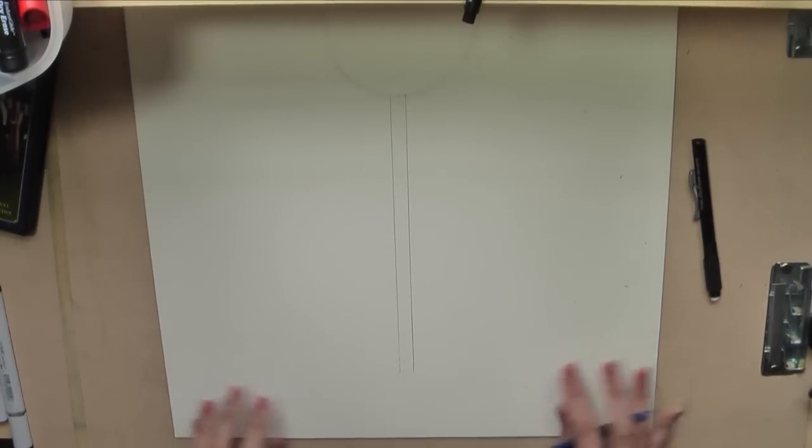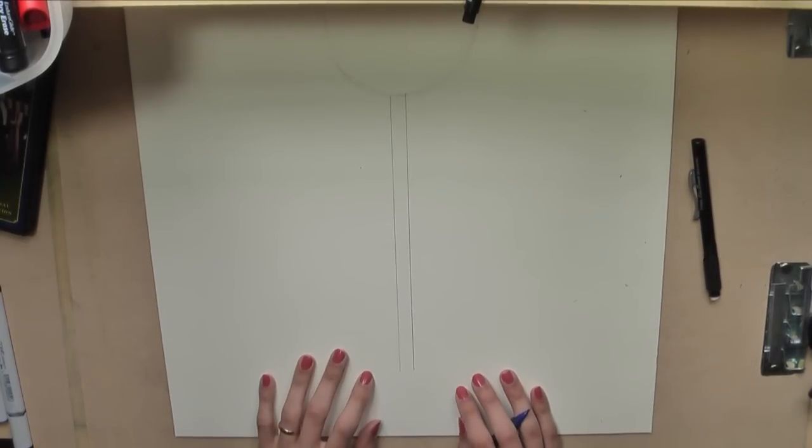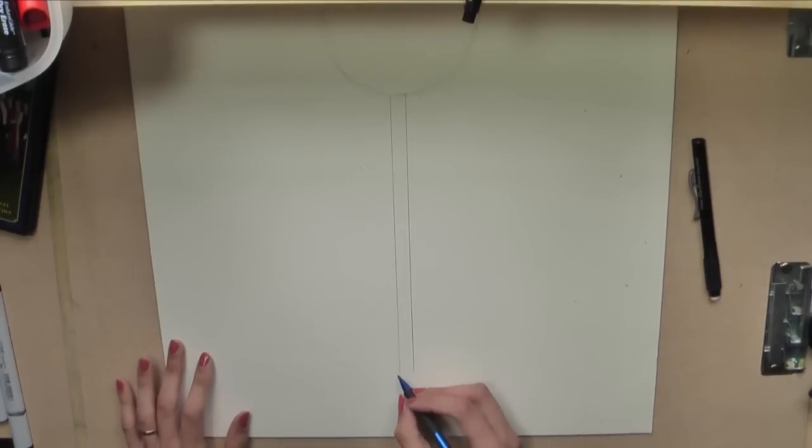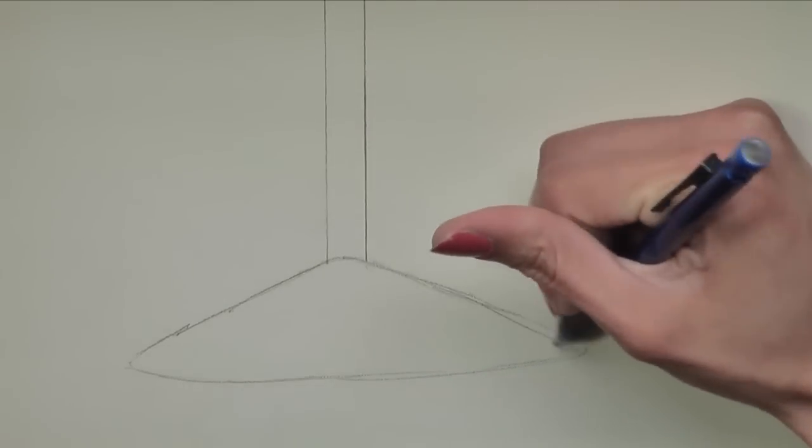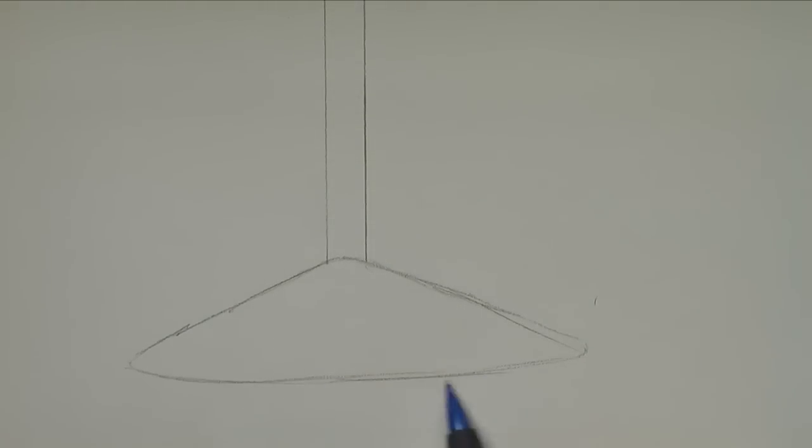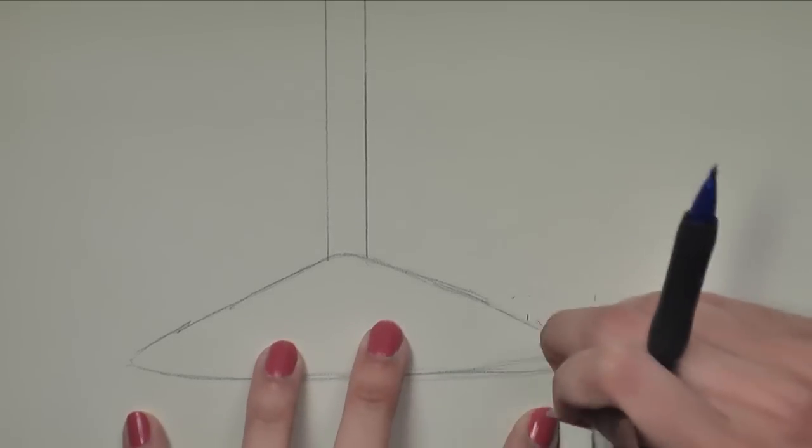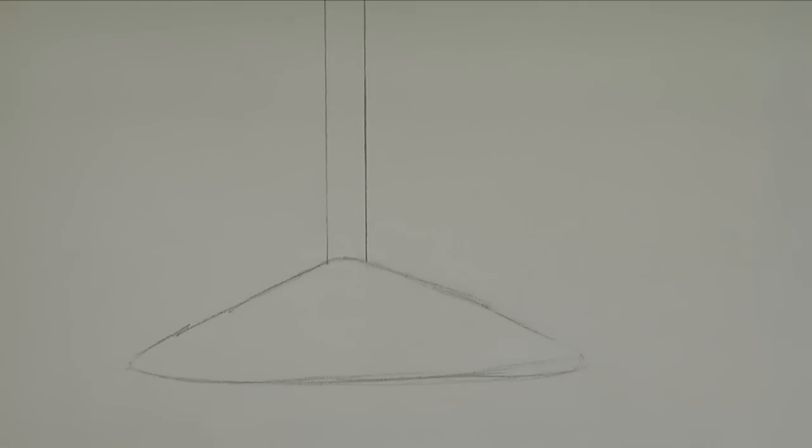Now we need the bottom of our wine glass, which is kind of a triangular shape, a bit of a rounded bottom base. So, triangle, triangle, triangle. I didn't make that very even, did I? Did not make it even. Oh no! Okay, good enough.